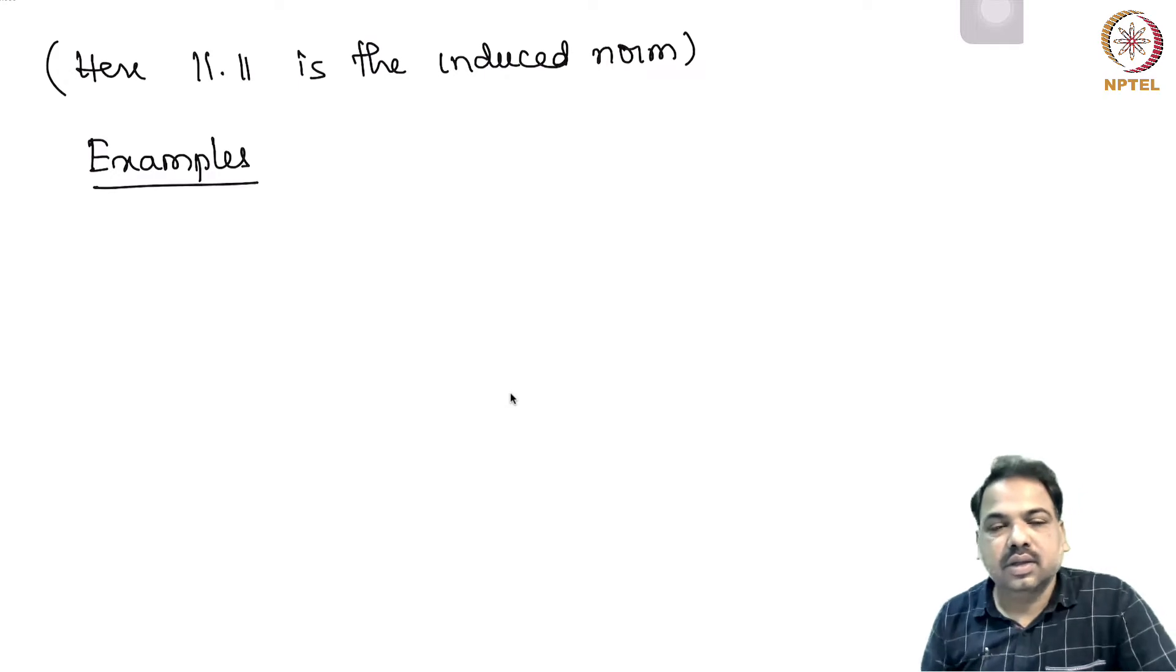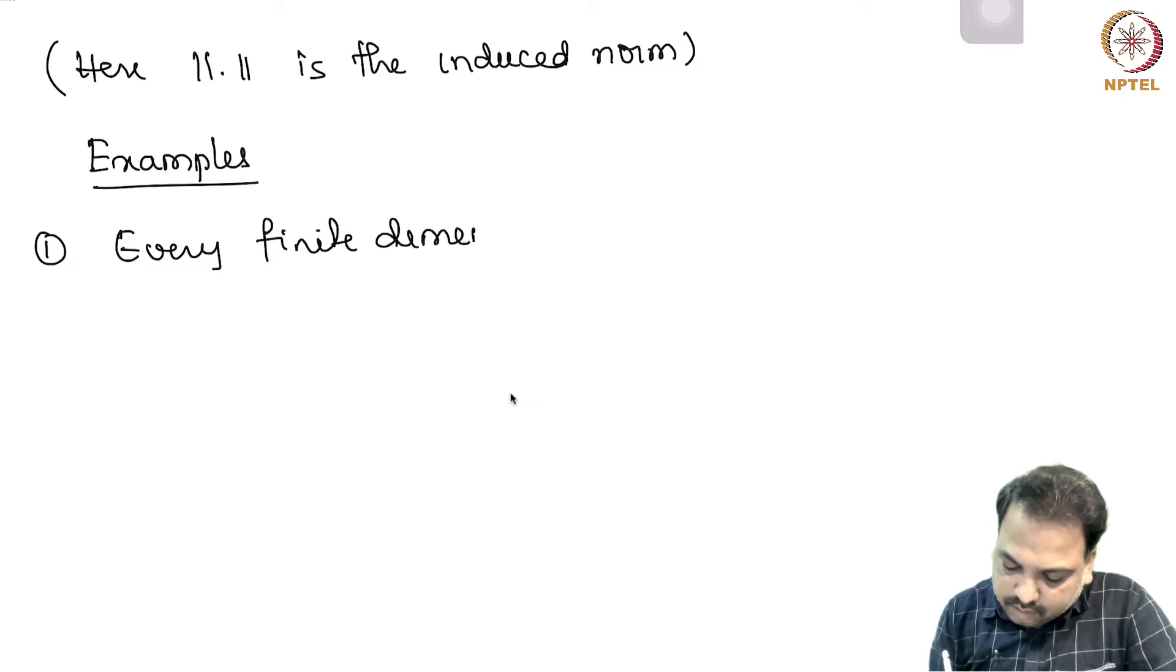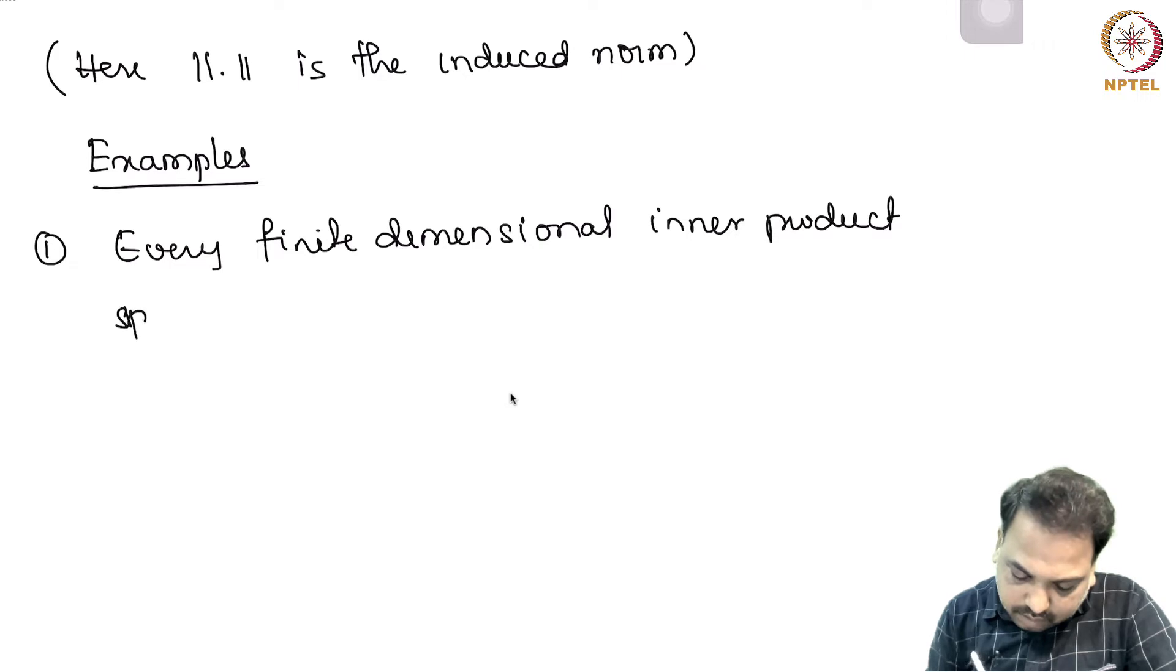We know that every finite dimensional normed space is complete. So in particular, when you take X to be a finite dimensional inner product space, it must be a Hilbert space.